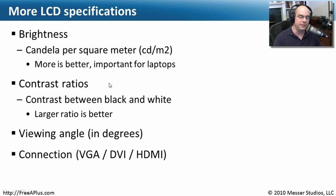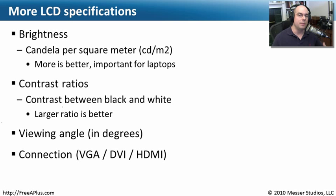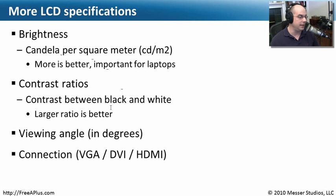Contrast ratio is also important. LCD monitors have pixels that are either on or off, and when off, a little light leakage means it's not truly black. The contrast ratio specification describes the ratio between the brightest white and the darkest black — the larger the ratio, the better the screen will look. This matters a lot for plasma and newer LCD televisions, and even more so for video editing or photography work.